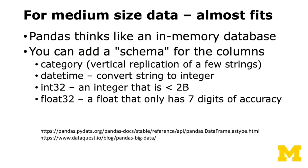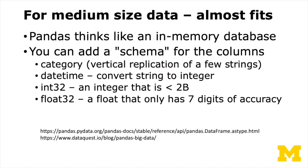Date time is really valuable — databases do the same thing. You might have a ten-character string representing a date; if you squeeze that down to a number representing seconds since 1970, it's the same information and you can save a lot of space. You can make your integers small if you know in advance that you have less than two billion as the range. And if you're doing floating point numbers and you're willing to tolerate seven digits of accuracy, you don't really need double precision at 64 bits — you can use float32.